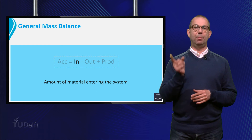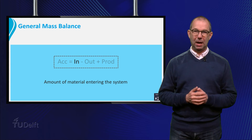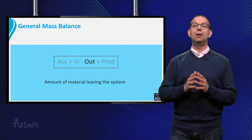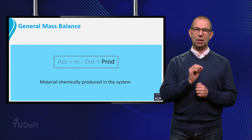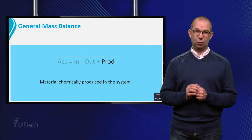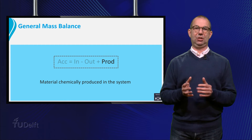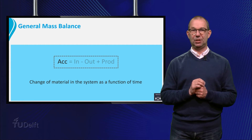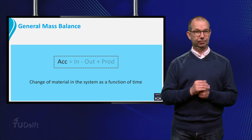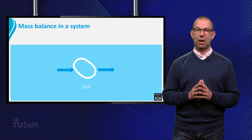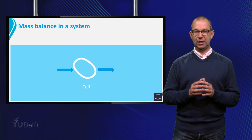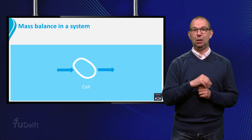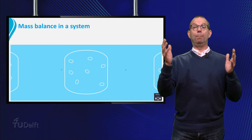Let's review the terms one by one. Inflow is the amount of material entering the system. Outflow is the amount of material leaving the system. Production is the amount of material that is chemically produced or converted from other compounds in the system. And finally, accumulation is the change in the amount of material in the system as a function of time. This general balance can be applied to any material entering or leaving a certain volume — from small scales like a cell, to a reactor vessel or to a complete industrial plant.